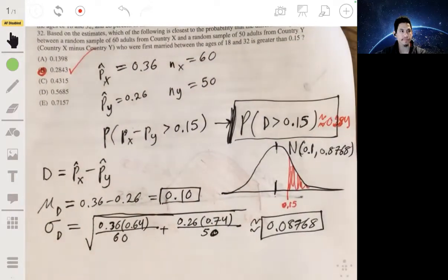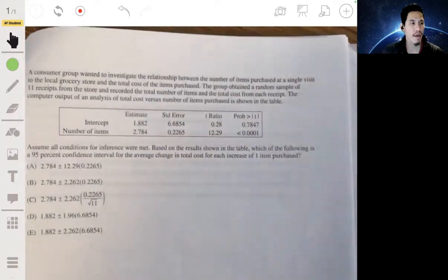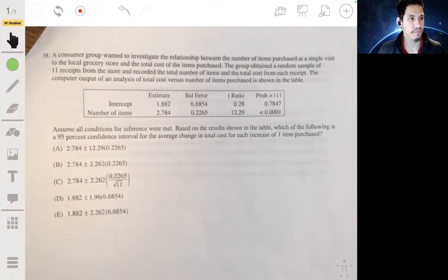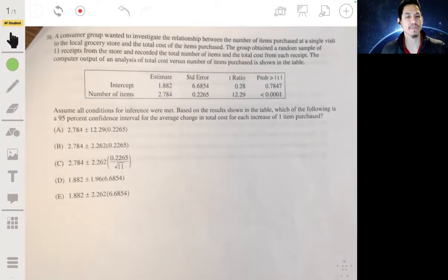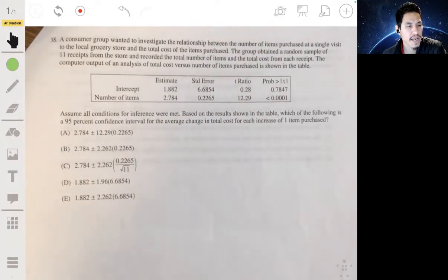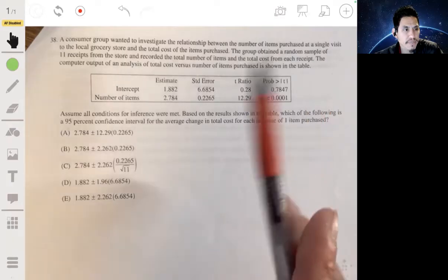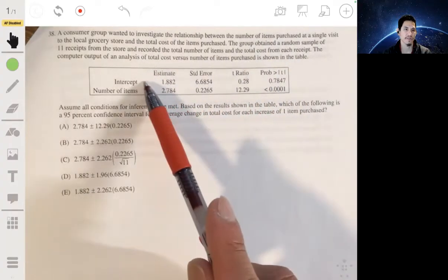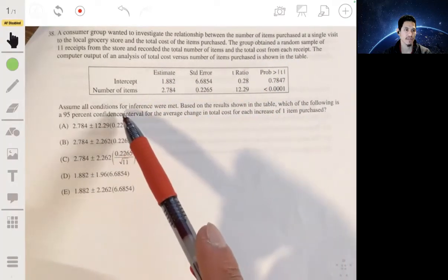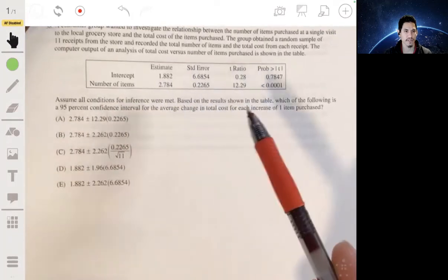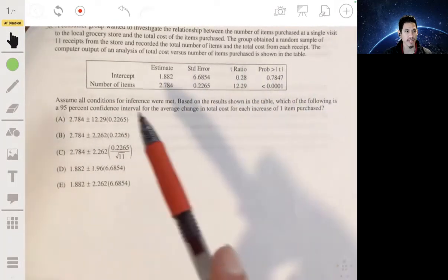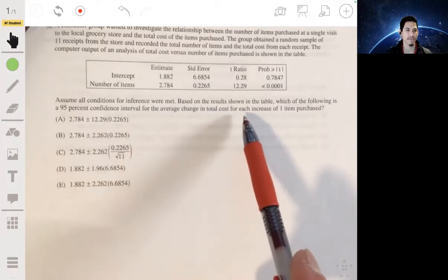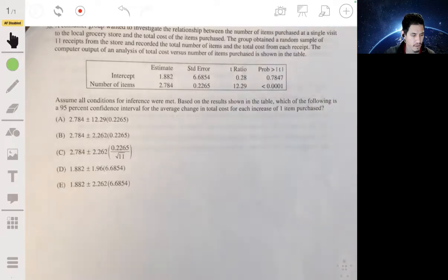All right. Only three more to go. All right. A consumer group wants to investigate the relationship between the number of items purchased at a single visit to a local grocery store and the total cost of the items purchased. The group obtained a random sample of 11 receipts from the store. Assume all conditions for inference were met based on the results shown in the table. Which of the following is a 95% confidence interval for the average change in total cost for each increase of one item purchased?